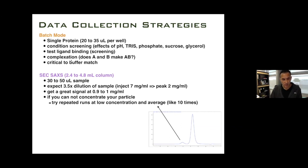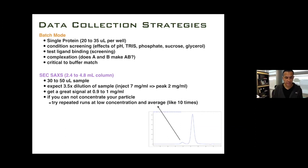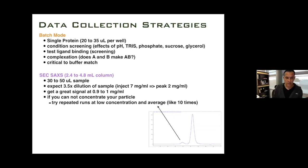Batch mode experiments will have issues with buffer matching. If you're only interested in low-resolution information that's fine, but the quality of the buffer match affects the extent of higher-resolution information you can extract. The poorer the buffer match, the lower the resolution you can get out of the experiment.